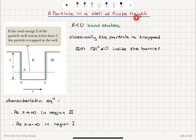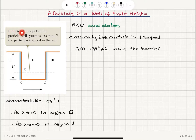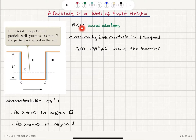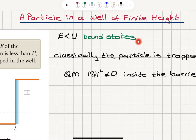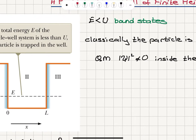A particle in a well of finite height. We will consider what happens if we change the boundary condition that the potential energy is infinite outside the box to finite outside the box. If the total energy of the particle-well system is less than U, less than the potential energy outside the box, then the particle will be trapped inside the well. If the total energy is less than the potential energy for this particle, the solutions are called bound states because they correspond to the particle trapped inside the box.